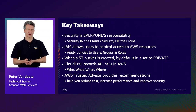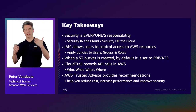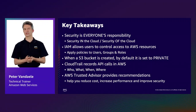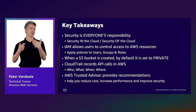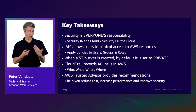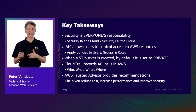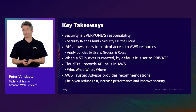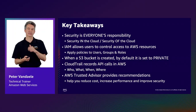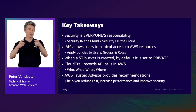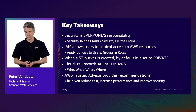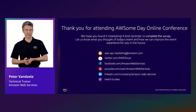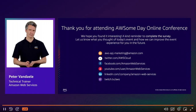In summary, security is a shared responsibility between AWS and the customer, and responsibilities vary depending on the services used. AWS IAM enables fine-grained access control to AWS services and resources. AWS CloudTrail records API calls made by users, roles, or AWS services. AWS Trusted Advisor evaluates your account and provides recommendations to optimize infrastructure, improve security and performance, and reduce costs.